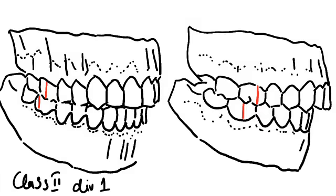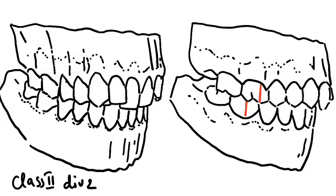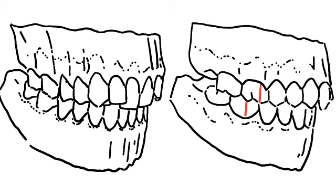Class 2 malocclusions occur when the upper teeth are positioned too far ahead of the lower teeth. Depending on whether there is a vertical or horizontal protrusion, this form of malocclusion is commonly referred to as either an overbite or overjet. Almost always it is the retrusive lower jaw that is causing this type of malocclusion.